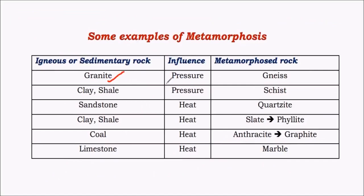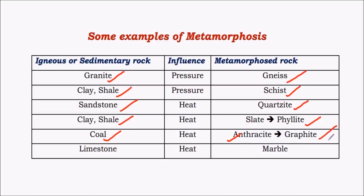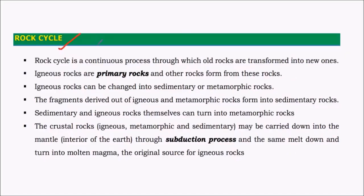Examples of metamorphic rocks include gneiss, slate, schist, marble, and quartzite. Granite (an igneous rock) under pressure gives rise to gneiss. Clay and shale (sedimentary rocks) under pressure give rise to schist, and under heat they give rise to slate, which on further heating gives rise to phyllite. Sandstone under heat gives rise to quartzite, which is rich in silica. Coal gives rise to anthracite, and anthracite under heat gives rise to graphite — 100% pure carbon. Limestone under heat gives rise to marble.